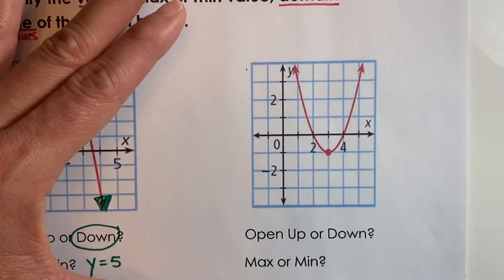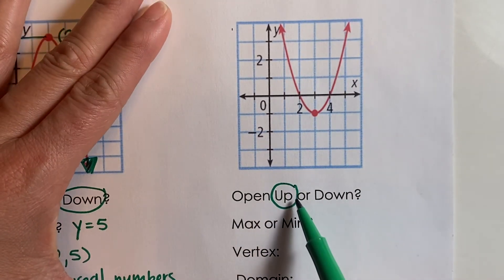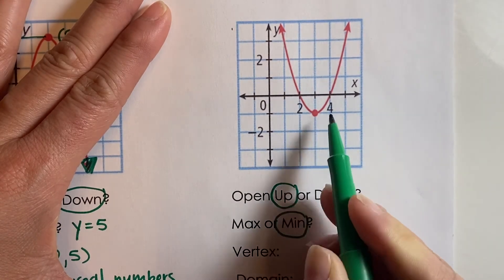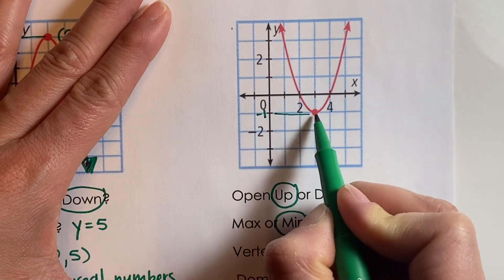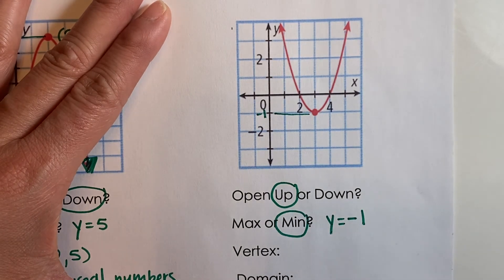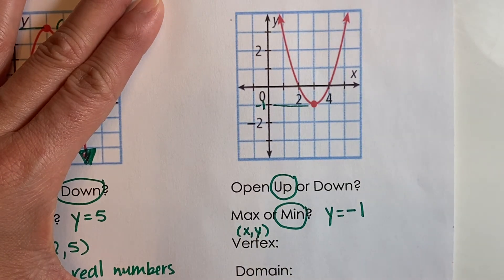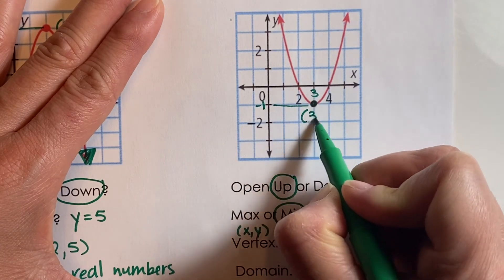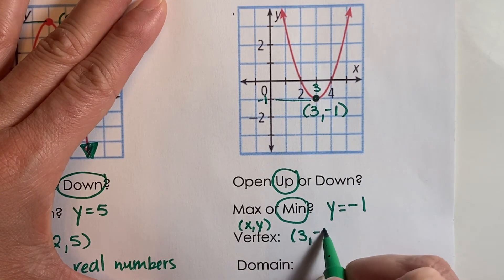Let's look at another example. This graph is opening up, so we know there's a minimum value. The minimum value — the lowest y value in the graph — is at negative 1, so y equals negative 1. The vertex is the lowest point in the graph, which is the minimum, at positive 3, negative 1.